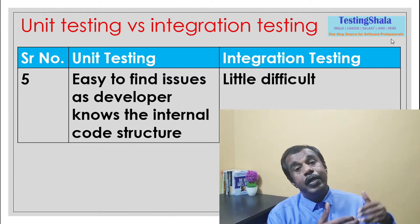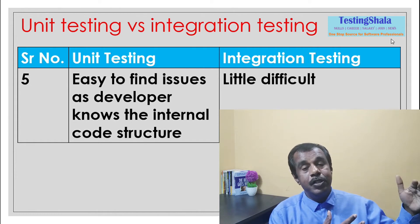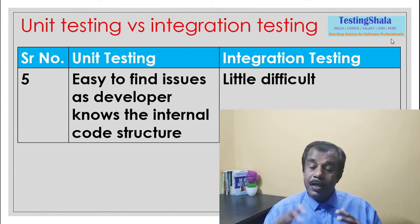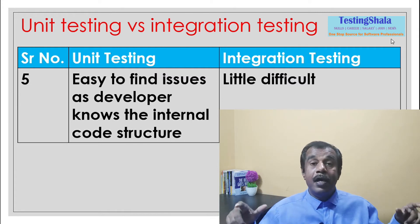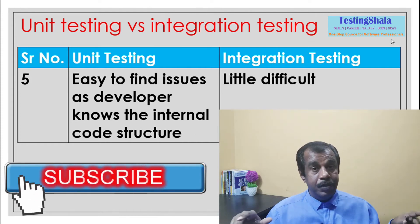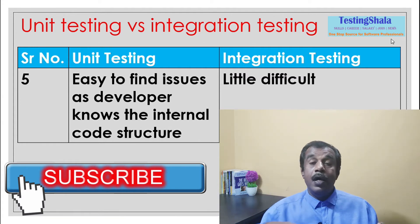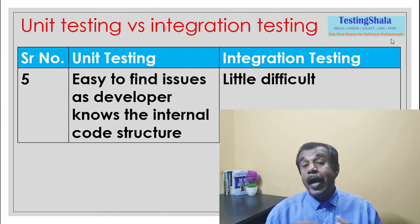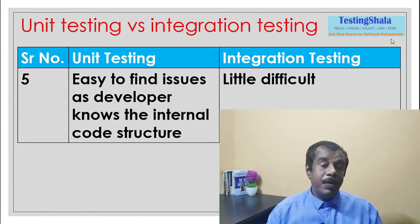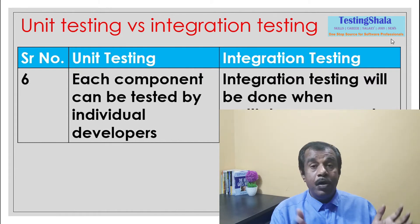The fifth major difference is that in unit testing, things are simpler for the developer because he knows how the code was written and writes test cases by watching the code. In integration testing, things become very complex because there are lots of dependencies, integration points, and data flows between modules. As the complexity increases, integration testing becomes significantly more complex than unit testing.